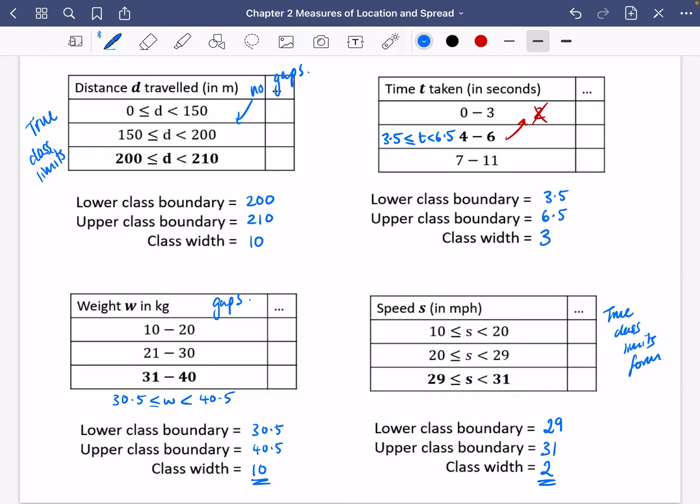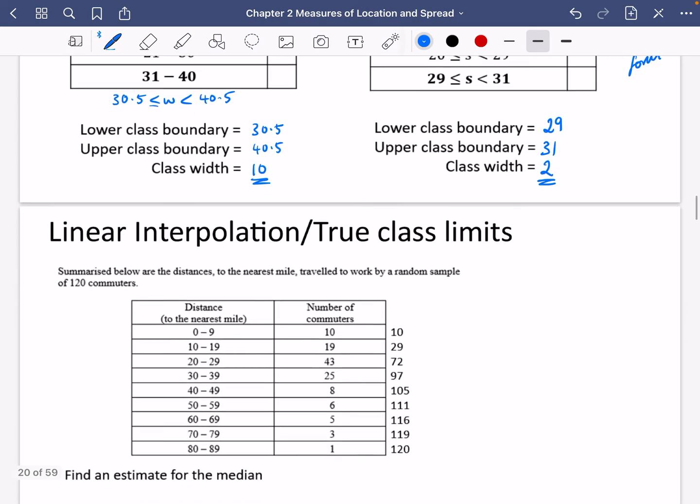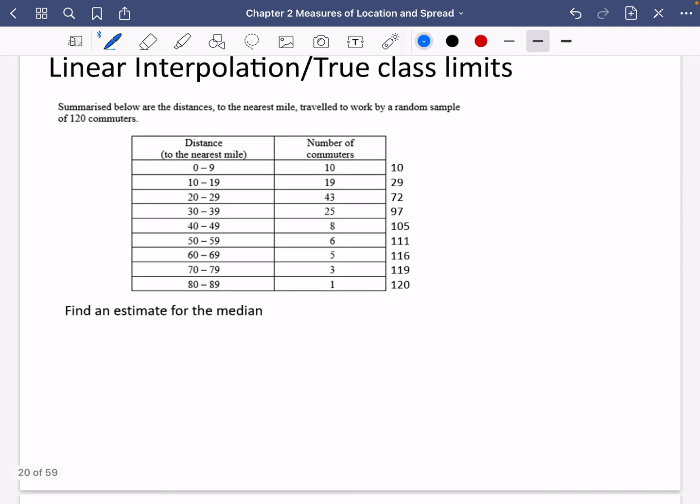Okay, so what I will do is now I'm going to use this in an example to do some linear interpolation with some true class limits. So it says here, summarized below are the distances to the nearest mile traveled to work by a random sample of 120 commuters. So N is 120. And we want to find an estimate for the median. So we know that the median is going to be in 120 divided by 2. It's going to be in the 60th position. So the 60th position, I very kindly put the cumulative frequency already in this bit. The 60th one is going to be in this group here. Because it's going to take us from the 29th to the 72nd, which is the 60th one is going to be inside that group.